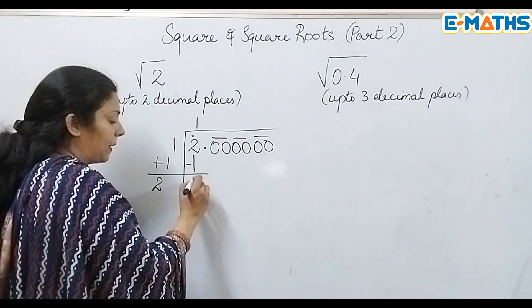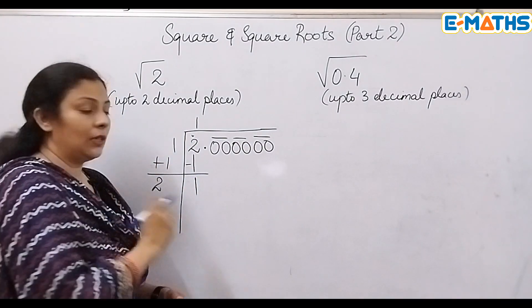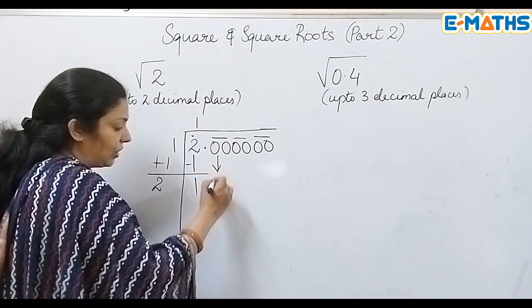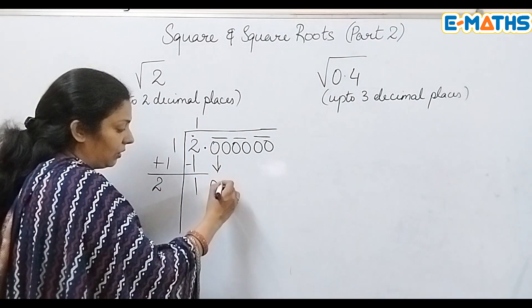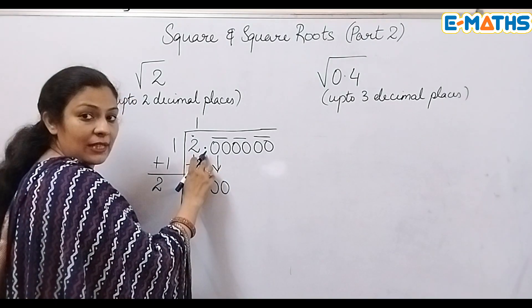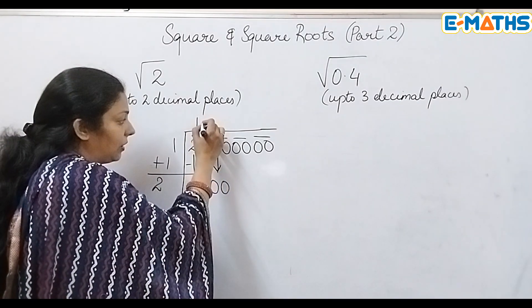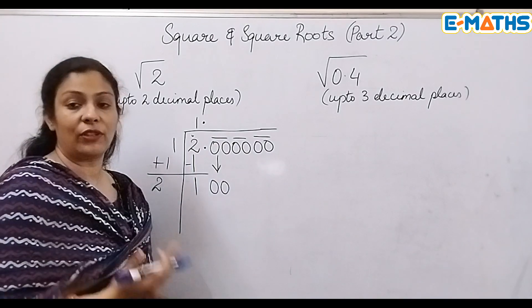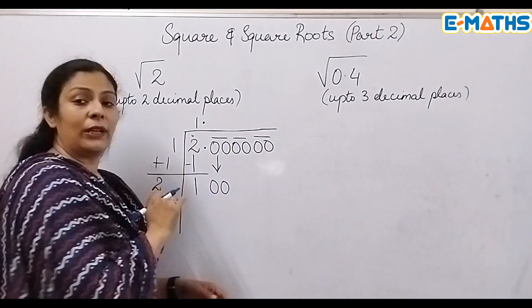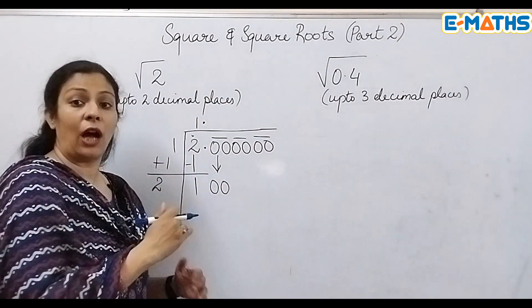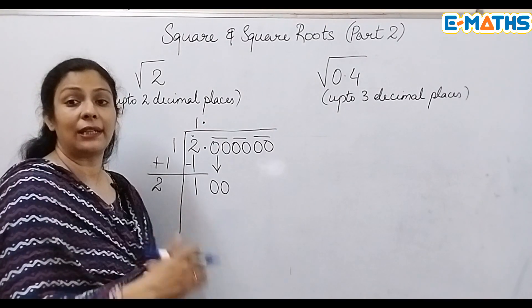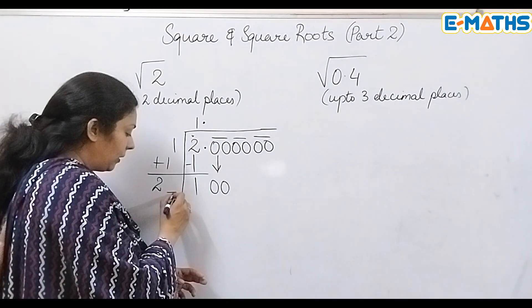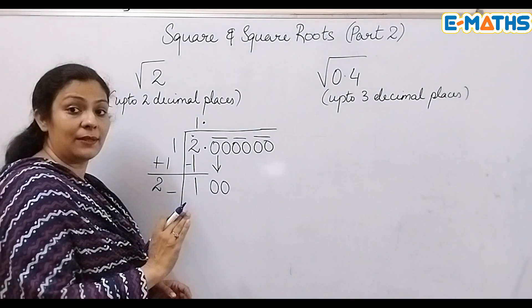Now to bring this pair of zeros down I have to cross the decimal, so I'm going to put a decimal point here because only the decimal part is left to be solved. I can put the decimal point like this also — I'll tell you more about that after solving this question. Now I need to take a number at the ones place which when multiplied by the same number I take up here gives me 100 or a number lesser than it.